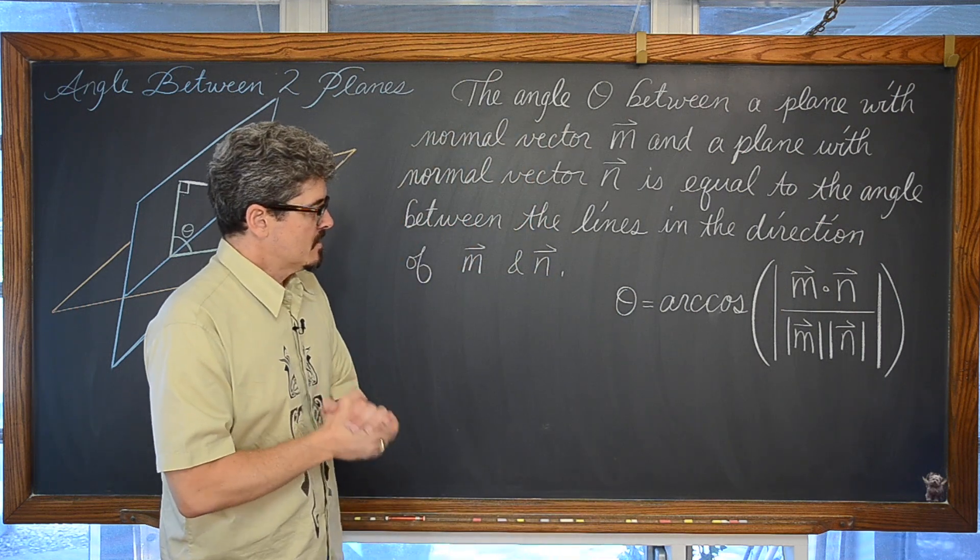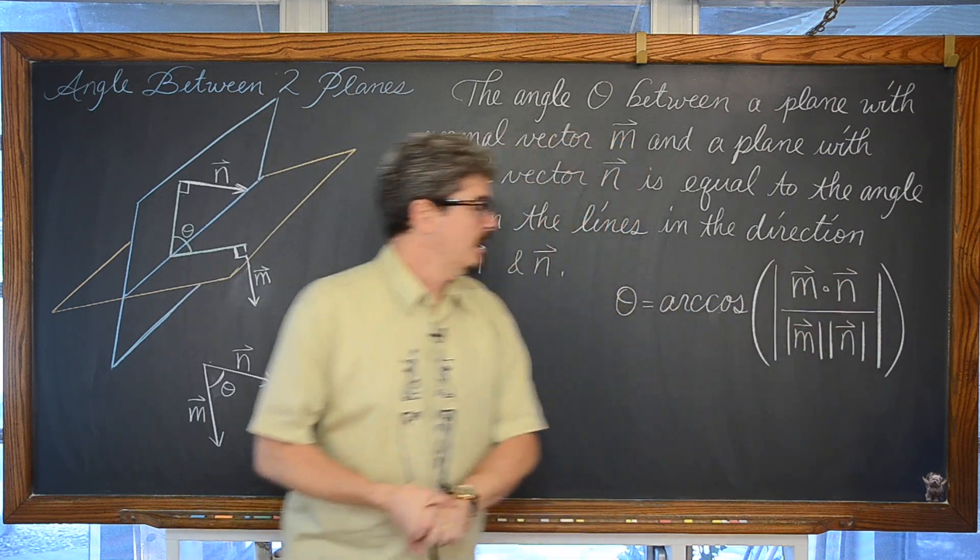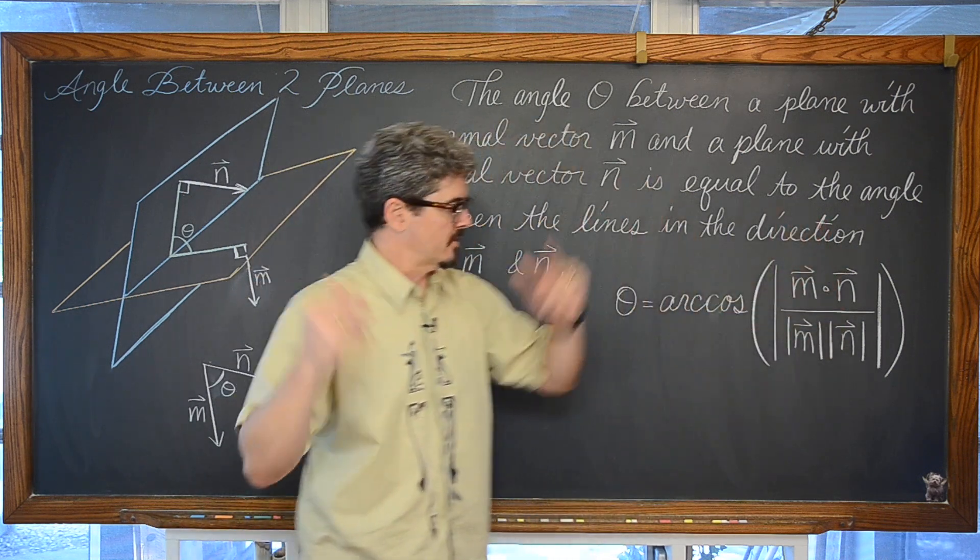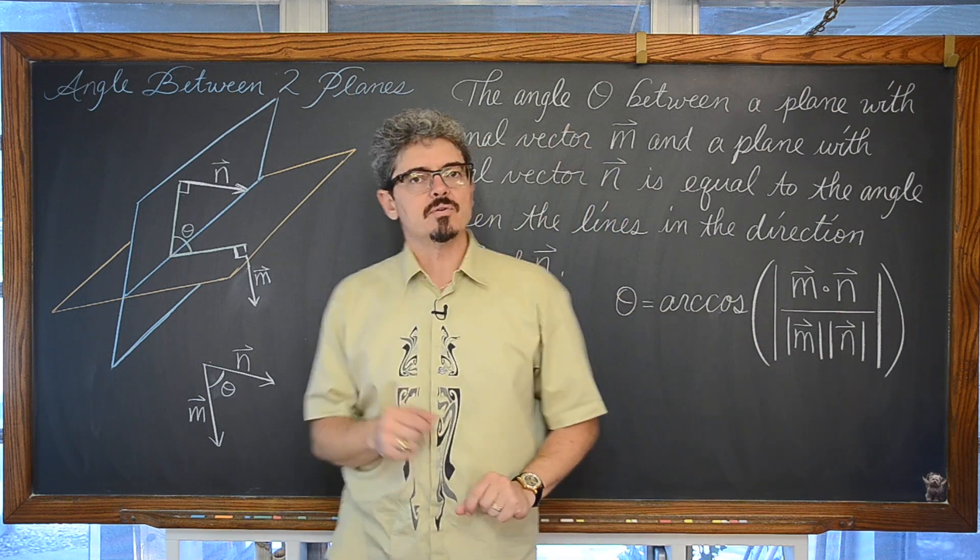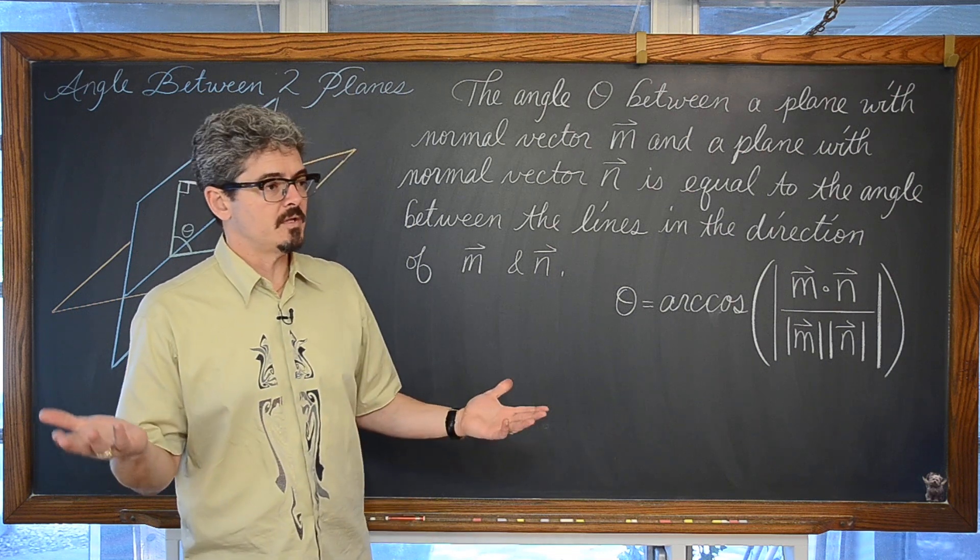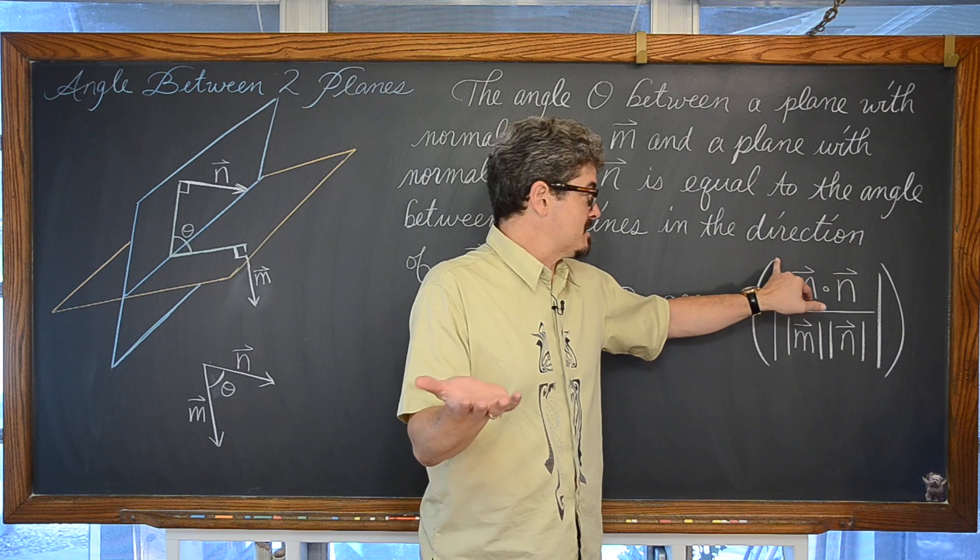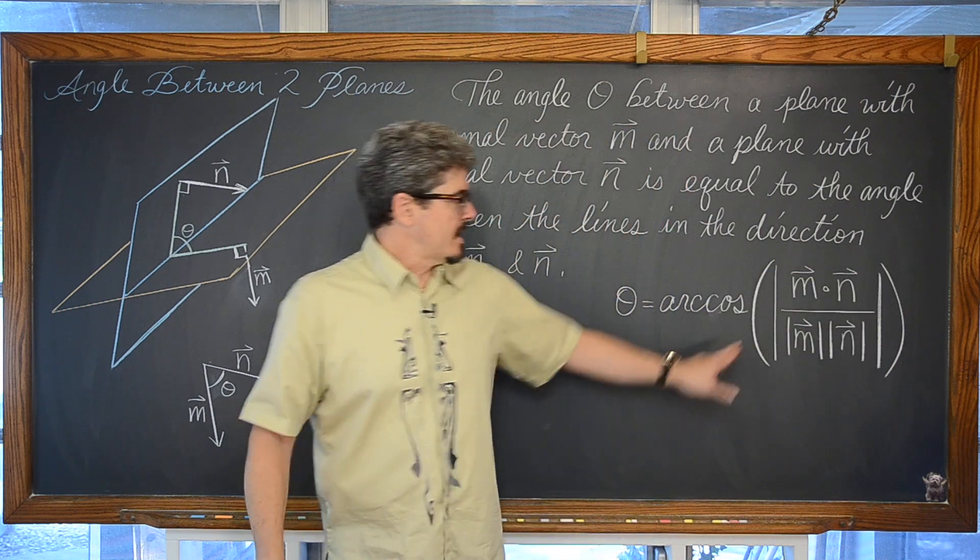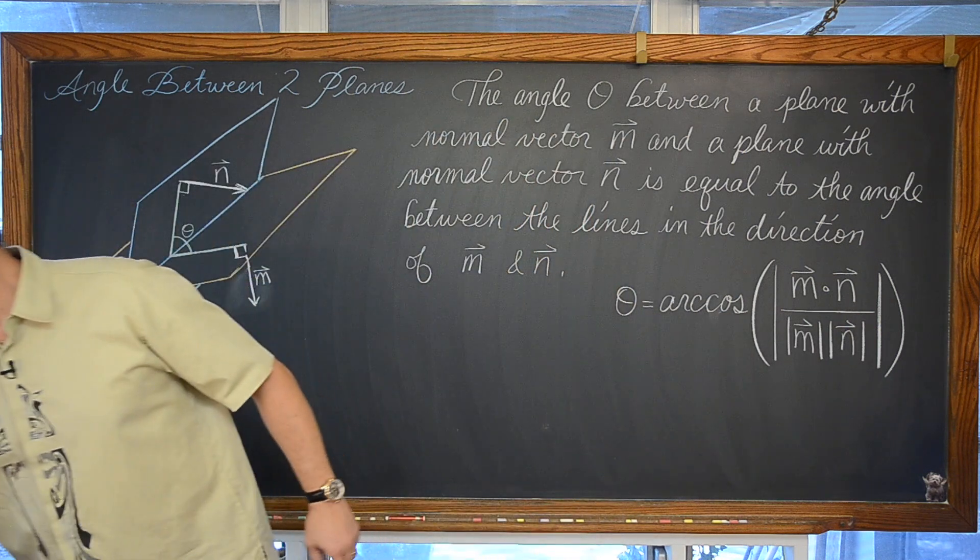Theta is equal to the arc cosine of the absolute value of the dot product between vector m and vector n, the dot product, scalar product, inner product, whatever your textbook is calling it, divided by the magnitude of vector m times the magnitude of vector n. When we found the angle between two vectors, it was the same formula basically except there was no absolute value function here. We had that absolute value function when we were finding the angle between two lines.